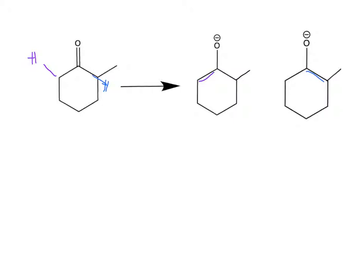The molecule on the right is more stable because the alkene is more substituted. However, on the left, because there are two hydrogens at that carbon versus the one on the other carbon, this molecule can be seen as the faster product. The word we use to describe this product is kinetic, because of the two hydrogens it tends to be faster, and this other one we call thermodynamic, because it tends to be more stable.